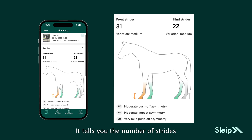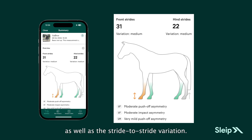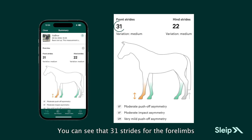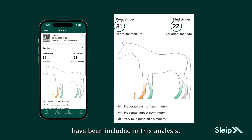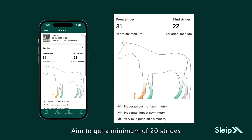It tells you the number of strides captured in your recording as well as the stride-to-stride variation. You can see that 31 strides for the forelimbs and 22 strides for the hind limbs have been included in this analysis. Aim to get a minimum of 20 strides for both fore and hind.